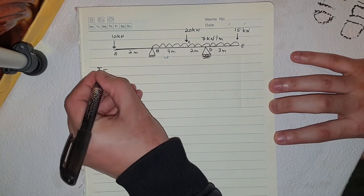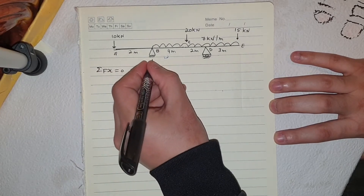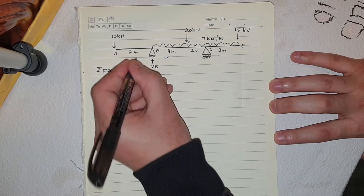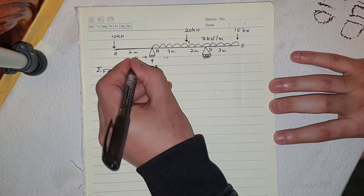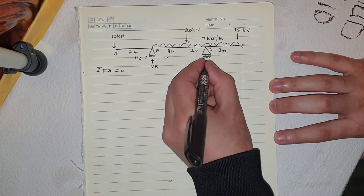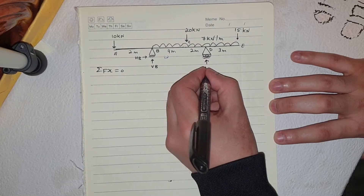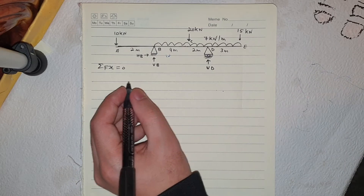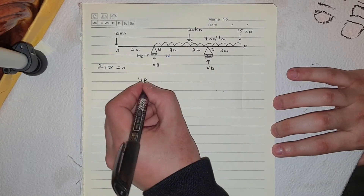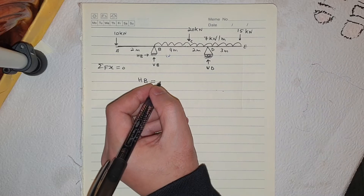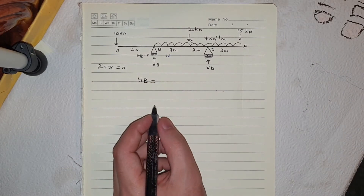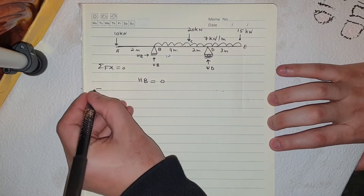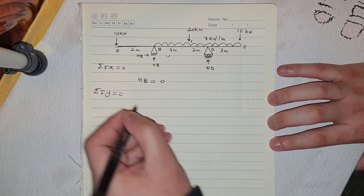Step one: we are going to take summation of Fx which is equal to zero. We have at point B a vertical reaction Vb, a pin load, and Hb. The roller has only a vertical reaction which is Vd. So Fx equals Hb, and we don't have any force acting horizontally, therefore Hb equals zero.